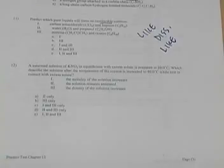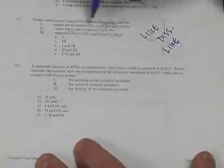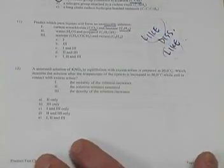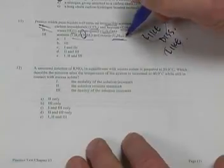Question 11: predict which pure liquids will form an immiscible solution. A miscible solution means they dissolve in one another; immiscible means they will not mix. The rule is like dissolves like — polar dissolves polar, nonpolar dissolves nonpolar. Carbon tetrachloride and heptane (C₇H₁₆) are both nonpolar, so they mix. H₂O and propanol are both polar. Acetone is polar and octane (C₈H₁₈) is nonpolar — so number 3, acetone and octane, will be immiscible.